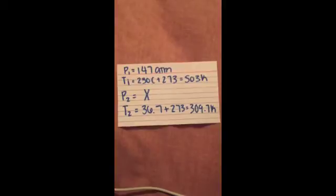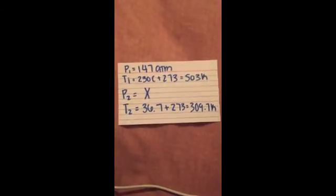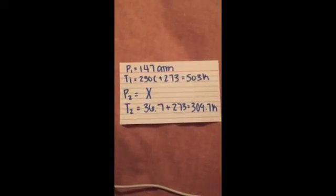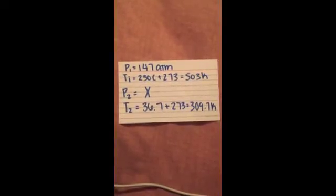Our second pressure is unknown, therefore the variable x is in its place. Our second temperature is 36.7, you add the 273 equaling 309.7 kelvin.